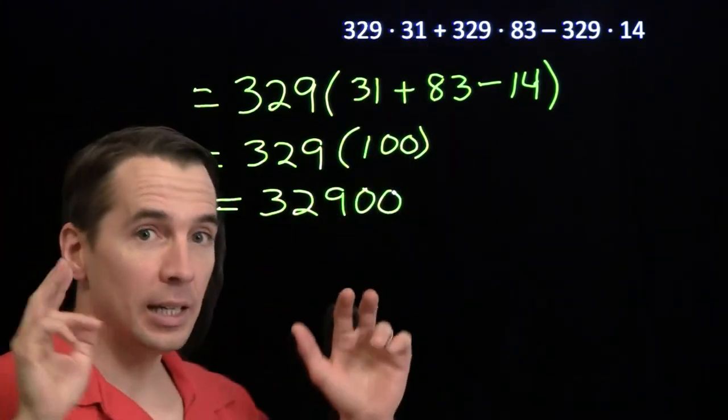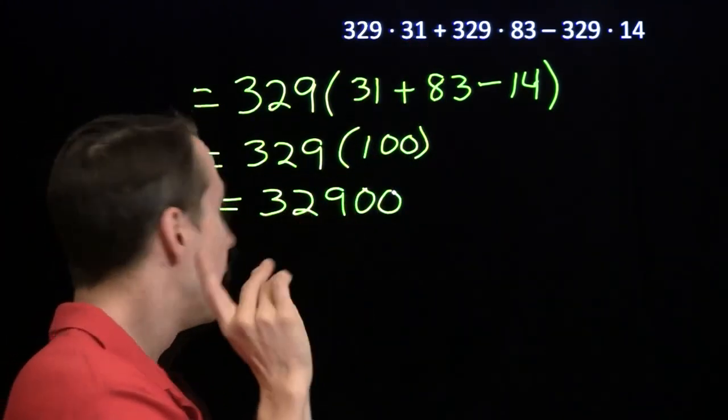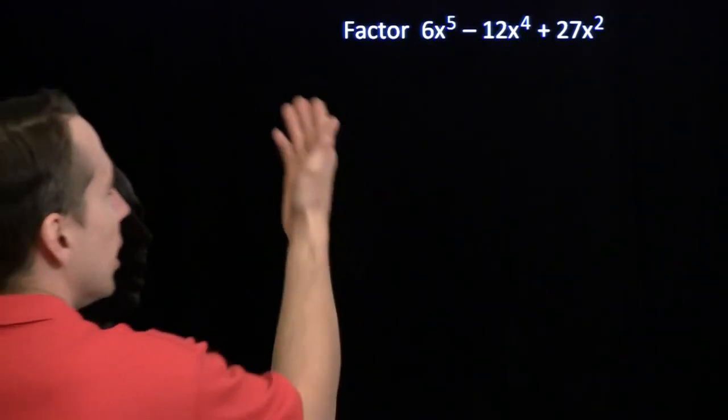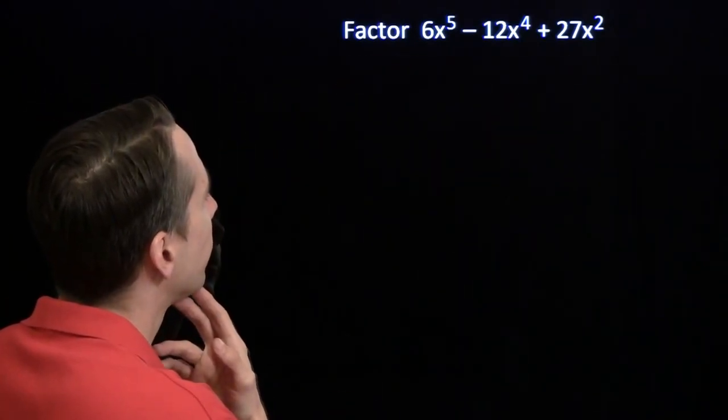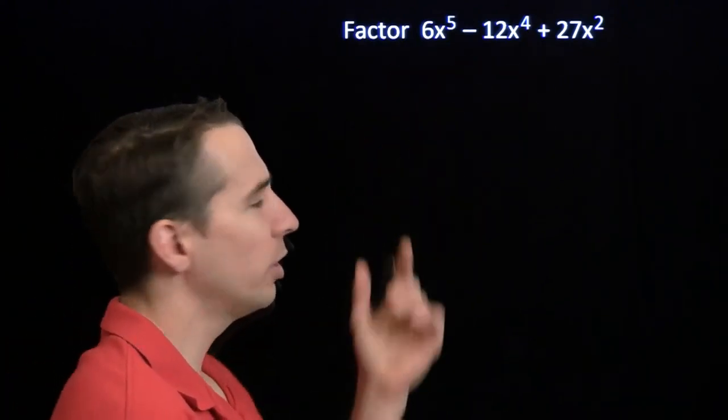We run the distributive property in reverse. We call this factoring. Now, let's see what this looks like if we include some variables. Now here, well, see these constants, the 6, the 12, and the 27? They're all multiples of 3.